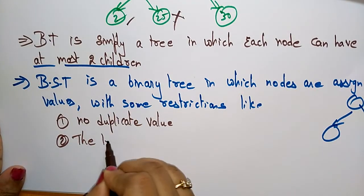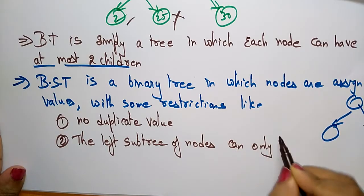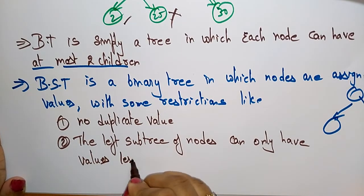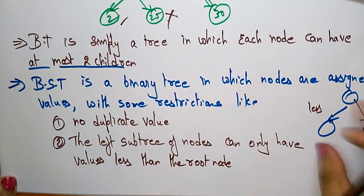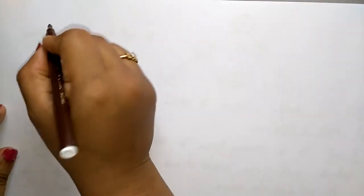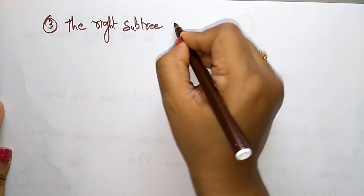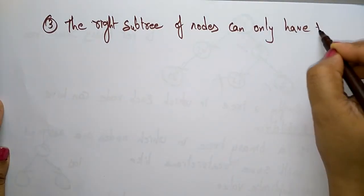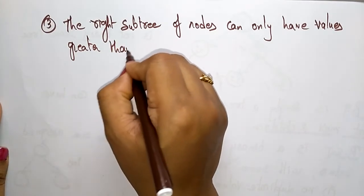The next condition: the left subtree of a node can only have values less than the root node. So the left side should be less than the root node. And the next restriction: the right subtree of a node can only have values greater than the root node — it should be greater than the root node.